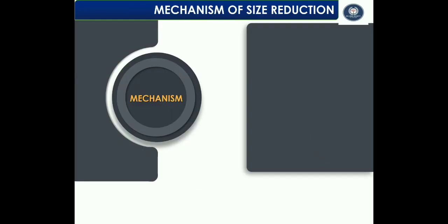The mechanism of size reduction is carried out using four different steps. The mechanism may vary with the nature of the material; therefore, each drug may require separate treatment. However, the general mechanism may be described as four distinct steps: impact, attrition, shear, and compression.